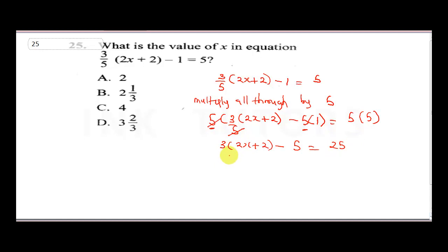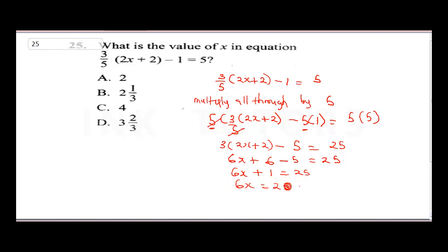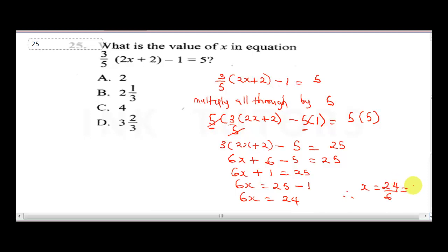Expanding the bracket: 3 times 2x gives 6x, plus 3 times 2 gives 6, minus 5 equals 25. Collecting like terms: 6x plus 1 equals 25, so 6x equals 24, therefore x equals 24 over 6, which gives x equals 4. The correct answer is C.